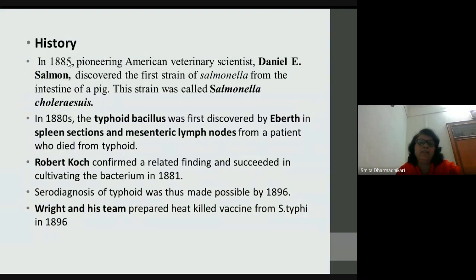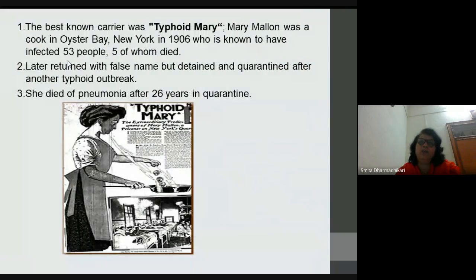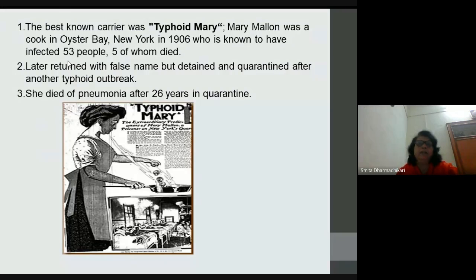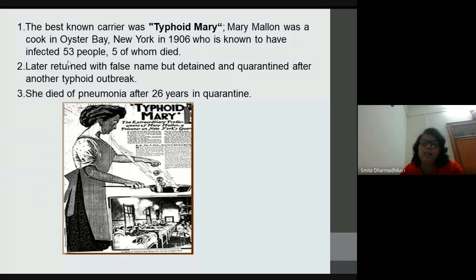Laboratory diagnosis of typhoid became possible in 1896, and Wright first prepared a heat-killed vaccine from Salmonella typhi. Typhoid Mary — Mary Mallon — was a cook in Oyster Bay, New York, a carrier known to have infected 53 people, five of whom died. She was detained and quarantined after another typhoid outbreak and died of pneumonia after 26 years in quarantine, illustrating the importance of carriers in communicable diseases like typhoid.